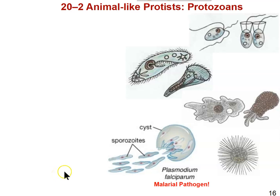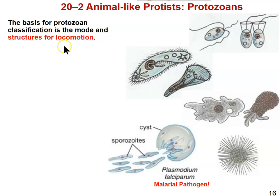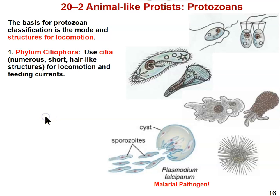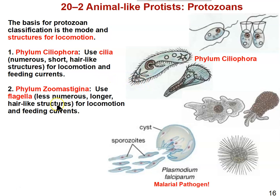Looking at just the animal-like protists: they are classified by their structure for locomotion — their mode of locomotion. The phylum Ciliophora use cilia, which are short hair-like structures used to swim. These represent phylum Ciliophora — you might recognize them as paramecium and stentor from the lab. Protozoans that use flagella as their mode of locomotion have flagella that are longer than cilia, though both are made up of microtubules in the same arrangement. Flagella are simply much longer and less numerous than cilia.